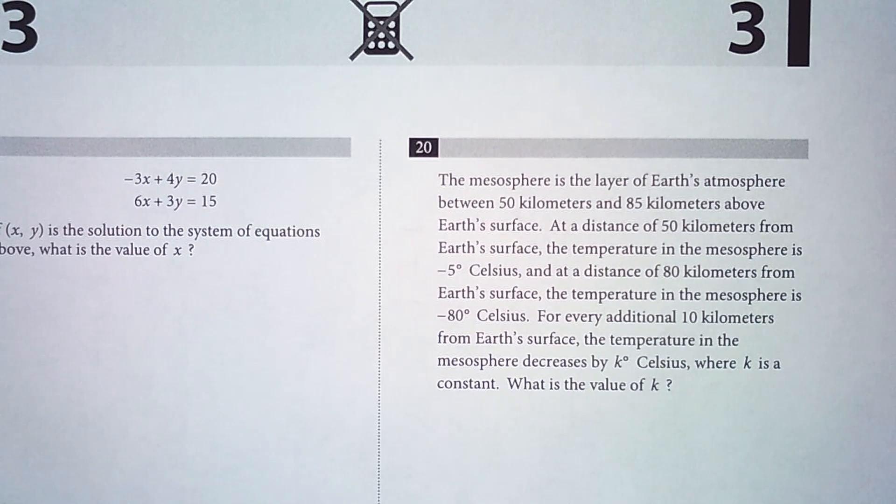For every additional 10 kilometers from Earth's surface, the temperature in the mesosphere decreases by k degrees Celsius, where k is a constant. What is the value of k?